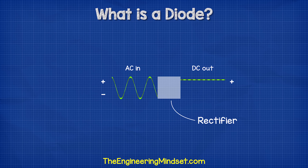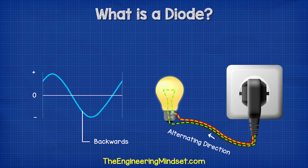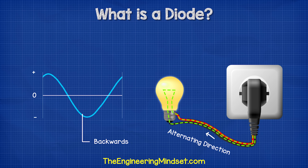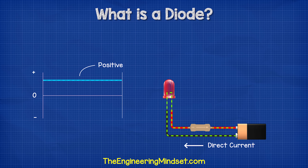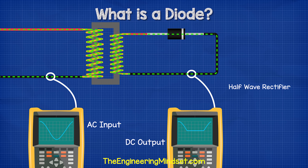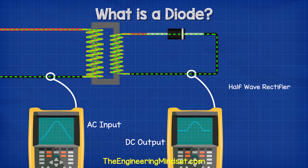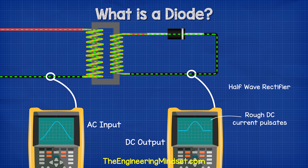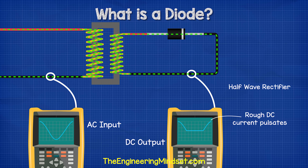We can also use diodes to convert alternating current into direct current. AC, or alternating current, moves electrons forwards and backwards, creating a sine wave with a positive and a negative half. But DC, or direct current, moves electrons in just one direction, which gives us a flat line in the positive region. If we connect the primary side of a transformer to an AC supply and then connect the secondary side to a single diode, the diode would only allow half the wave to pass and block the current in the opposite direction. So the secondary side experiences only the positive half of the cycle, making it a very rough DC circuit, although the current pulsates — but we can improve this.